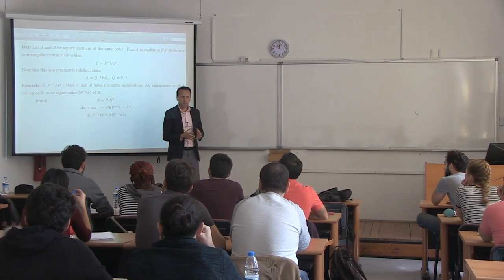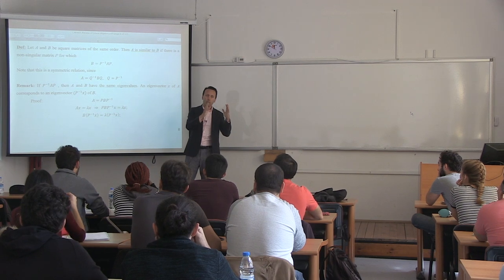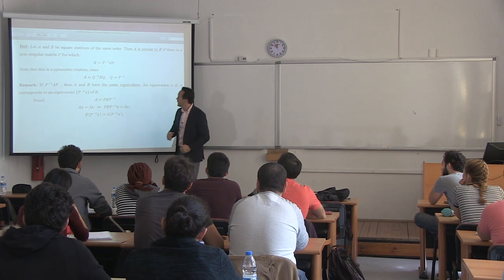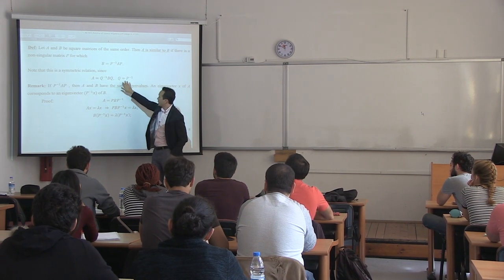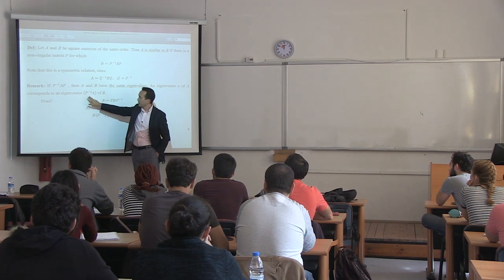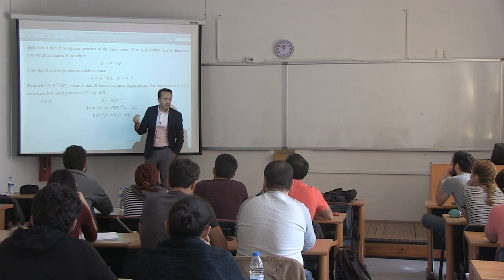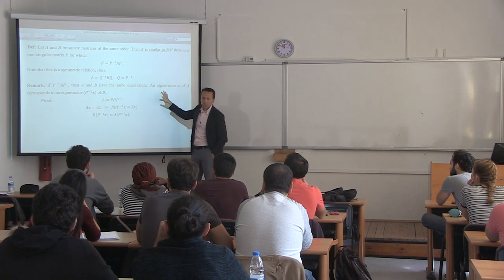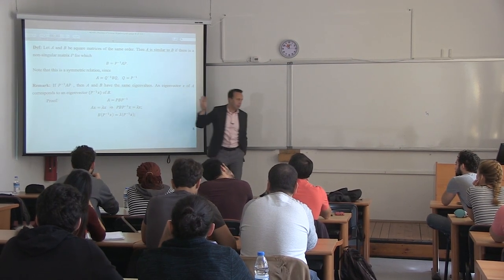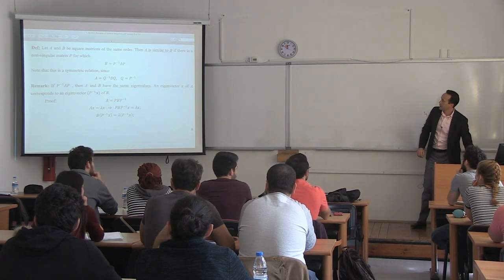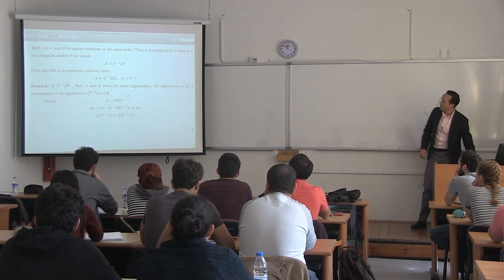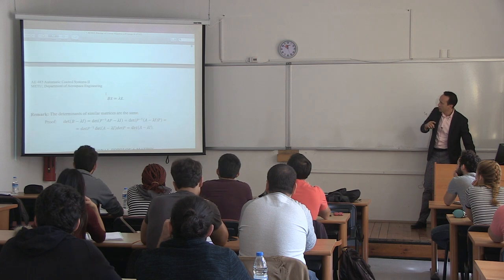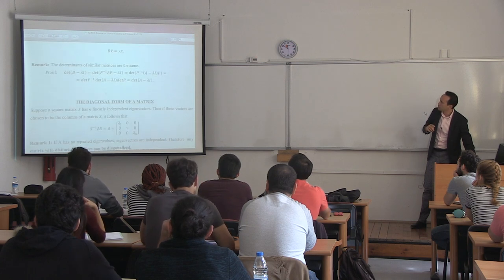This is sometimes useful because you might want to transform one matrix to another matrix with the same eigenvalues. The eigenvalues are the same, and the eigenvectors also have a relation — it's P inverse times x of B. We will be talking about similar matrices a little bit more later.